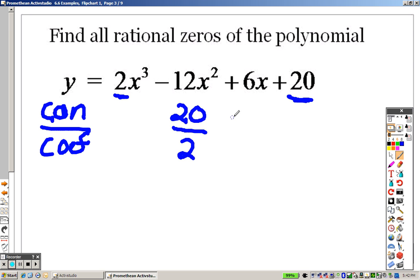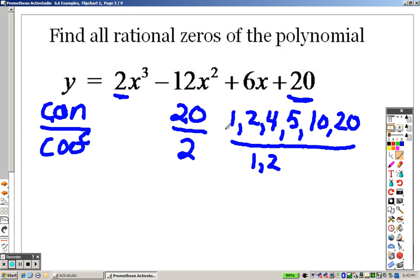Here's what that means. You need to find all the numbers that are divisible by 20. So let's take a look here. I can have 1, 2, 4, 5, 10, and 20. Those are all numbers that are divisible by 20. All the numbers divisible by 2 are just 1 and 2, but here's the downfall. There's also a positive and a negative of all of those.